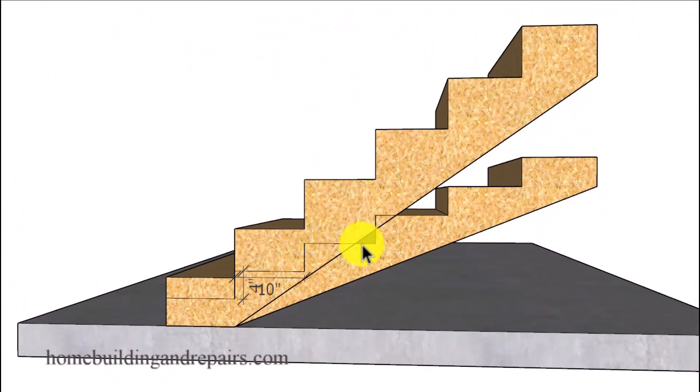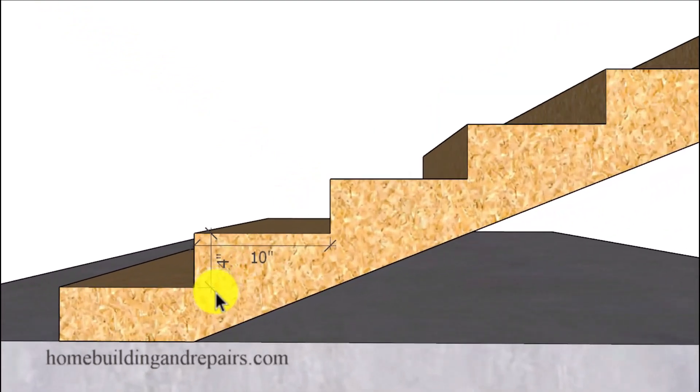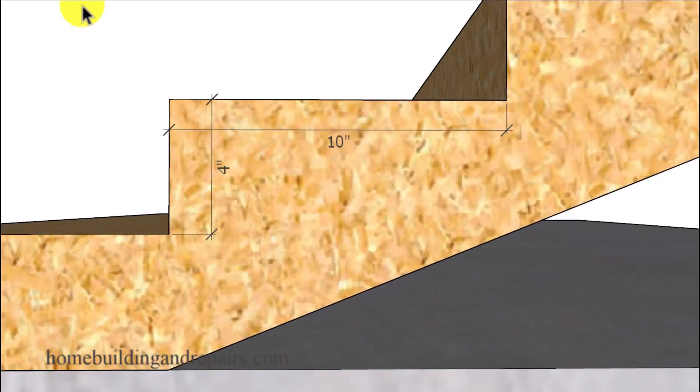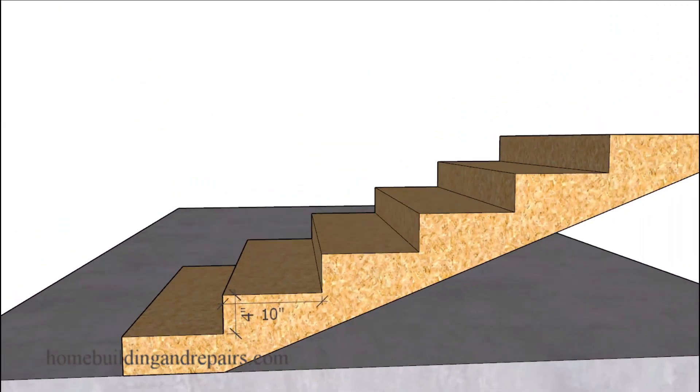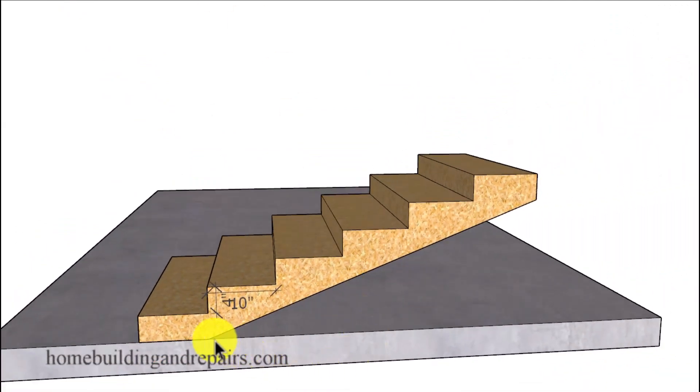In our next example the stair tread will be 10 inches deep also except the riser will be 4 inches tall. This provides us with the first way you can use to change the angle of the stairway. And you can see how drastic of an angle change it was.